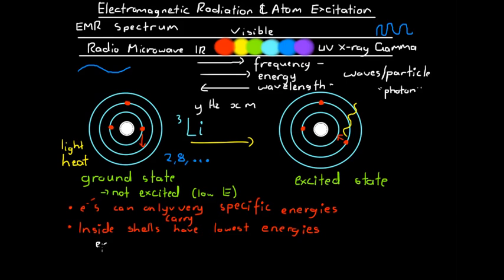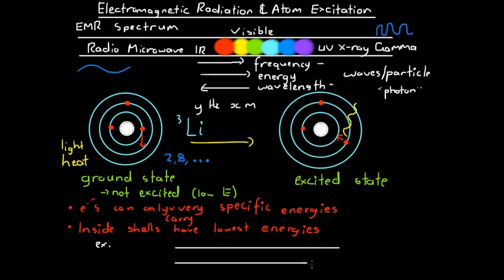So, for example, if we excited lithium with some heat and then observed what colors of light were emitted as the atom was de-excited — let's say we observed that some blue light was released and some yellow light was released from the atom. We've observed two different colors of light, and we know that the two de-excitation processes that caused these colors are either from the third shell to the first shell, or from the second shell to the first shell. We want to identify which color of light represents which de-excitation process.